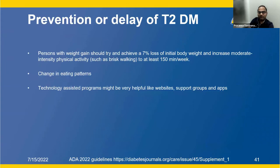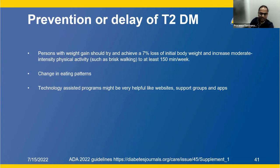For prevention or delay of type 2 diabetes: persons at risk should aim for a 7% loss of initial body weight and increase moderate-intensity physical activity to at least 150–300 minutes per week. Changes in eating patterns and technology-assisted programs including website support groups and apps may be very helpful.